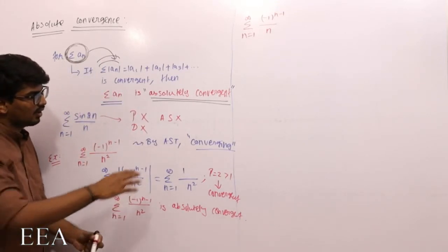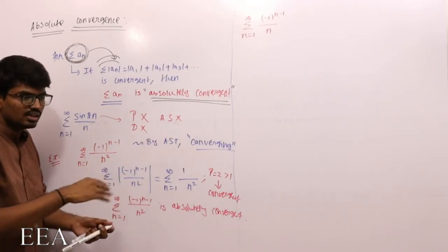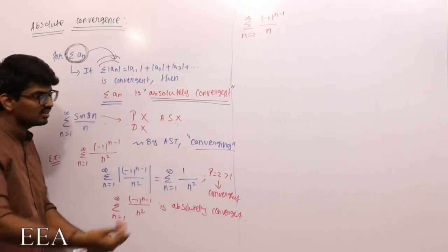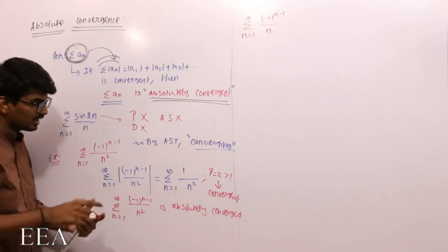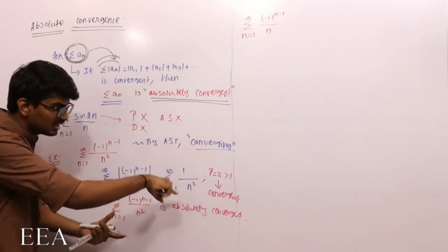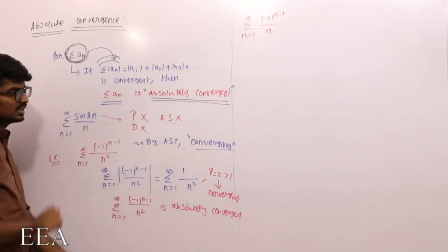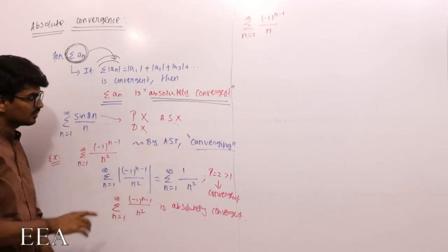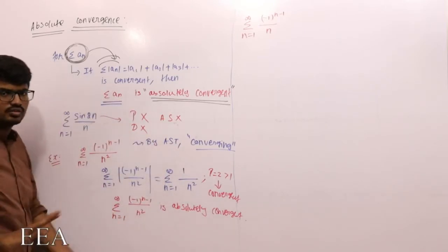So by the alternating series test, I proved this series is convergent — the limit goes to zero and 1/n² is decreasing. By the absolute convergence concept, I found the absolute value of the term, and that absolute series is convergent. Since the absolute series is convergent, the given series is absolutely convergent. So this series is both convergent (proved by AST) and absolutely convergent (proved by the absolute convergence test).